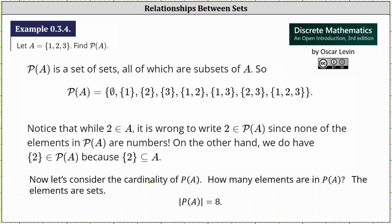Now let's consider the cardinality of the power set. Again, remember the cardinality is the number of elements in a set. In this case, all the elements are sets, but there are a total of one, two, three, four, five, six, seven, eight sets in the power set, and therefore the cardinality of the power set is equal to eight.